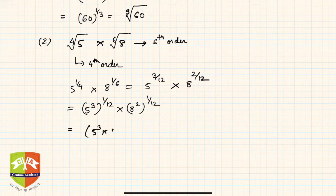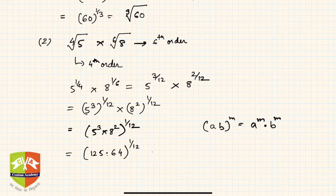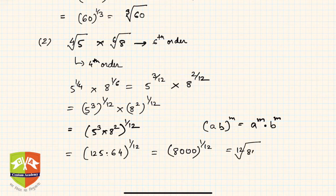This becomes five-cubed into eight-squared, all to the power one-by-twelve. We used the rule a·b to the power m equals a to the power m times b to the power m, in reverse. Five cubed is 125 and eight squared is 64, giving 125 × 64 = 8000. So the answer is 8000 to the power one-by-twelve, or the twelfth root of 8000.